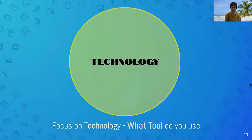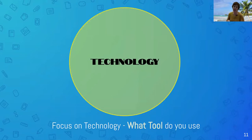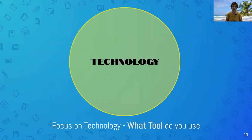So we've got C, we've got P, and now we have T — technology. What tool am I going to use? And that should really be 'what tools,' because if you're effectively integrating technology you're probably not just using one tool.